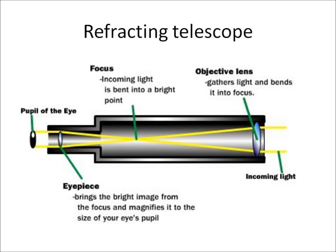Telescopes are used to magnify objects that are a long way away. A refracting telescope has two lenses to do this, the objective lens and the eyepiece lens. The objective lens gathers all the light from the object and bends it into focus. The eyepiece lens at the other end of the telescope brings the bright image from the focus and magnifies it to the size of the eye's pupil.